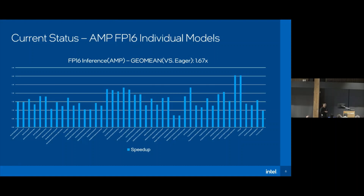There are two major reasons why performance is not as good as eager mode. One is on the inductor side: some configurations may not be optimal for Intel GPU performance. For example, the number of warps or CTAs needs to be adjusted to enlarge parallelism, and after doing that some performance recovers.